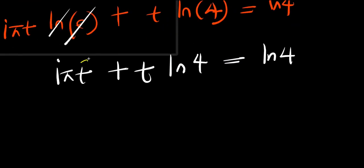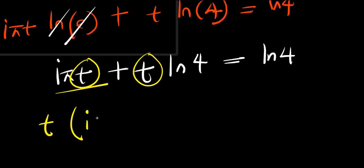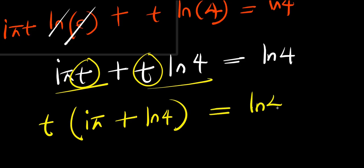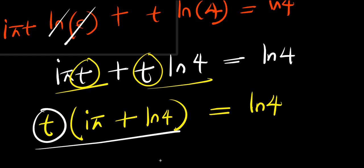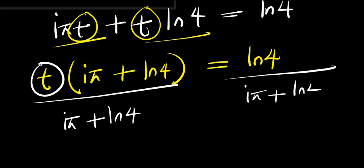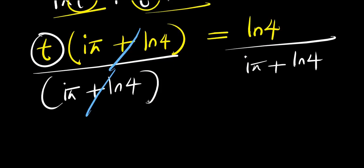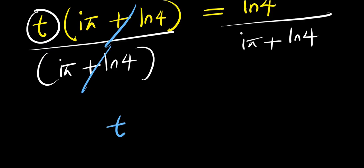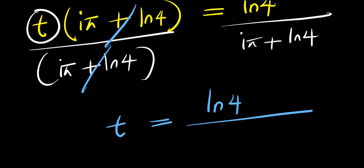Looking at this, there's a t here and a t here, so I can factor out t. Factoring gives t times (i·pi plus natural log of 4) equals natural log of 4. To isolate t, I divide both sides by i·pi plus natural log of 4. Those terms cancel, and I have t equals natural log of 4 divided by (i·pi plus natural log of 4).